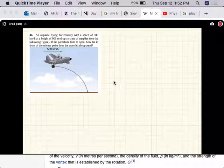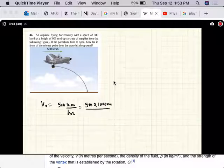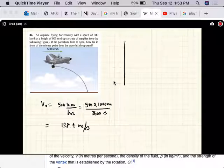All right, so the initial speed is 500 kilometers per hour and we want to convert that to meters per second. So that's 500 into 1,000 meters and 1 hour is 3,600 seconds.